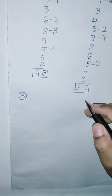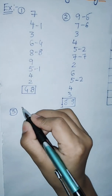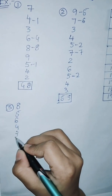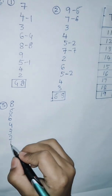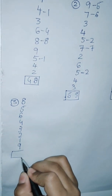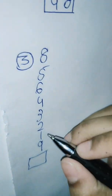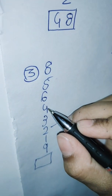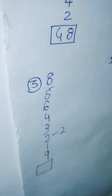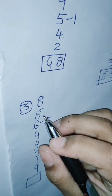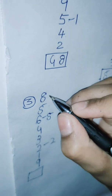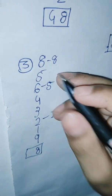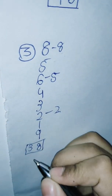The third sum is: 8, 5, 6, 4, 3, 2, 1, 9. 9 plus 1 equals 10. 10 plus 2 equals 12. 12, it is 2. 2 plus 3 equals 5. 5 plus 4 equals 9. 9 plus 6 equals 15, plus 5 equals 10. 10 plus 8 equals 18, equals 8. Write 8 here. And count the dashes: 1, 2, 3. Write 3 here. The answer is 38.